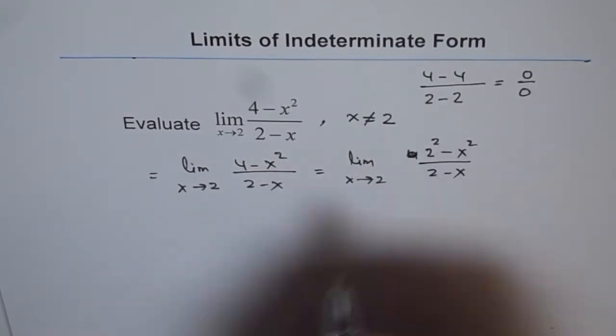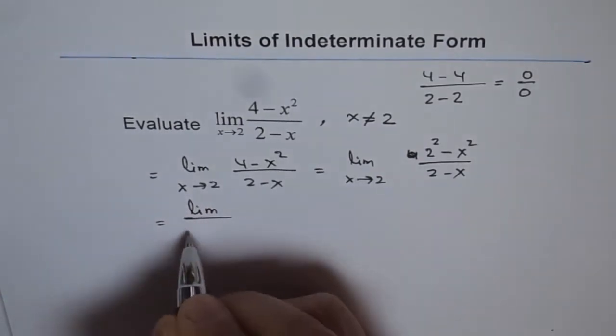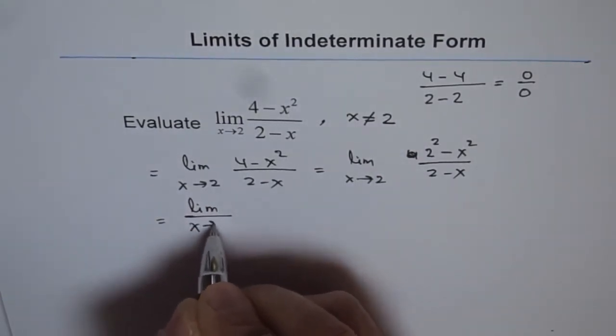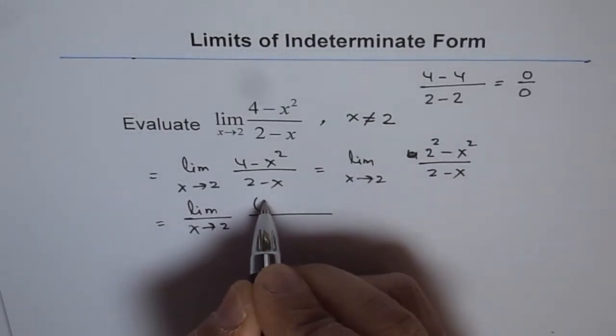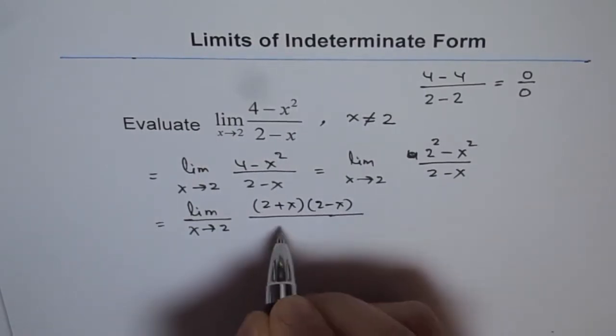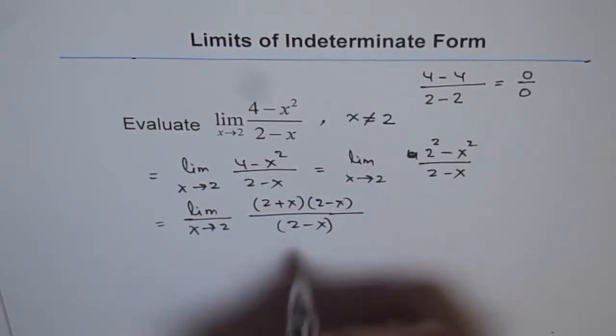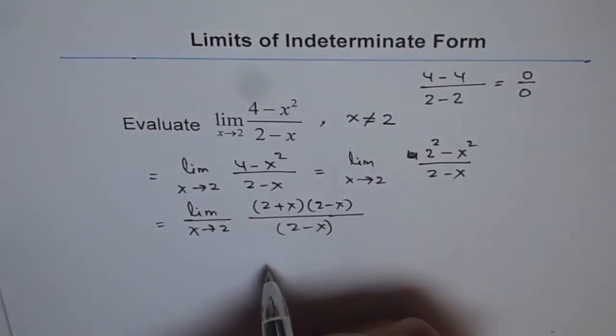Now this is difference of squares. So we can factor it as product of sum and difference where limit x approaches 2 and we will factor this as 2 plus x times 2 minus x divided by 2 minus x.